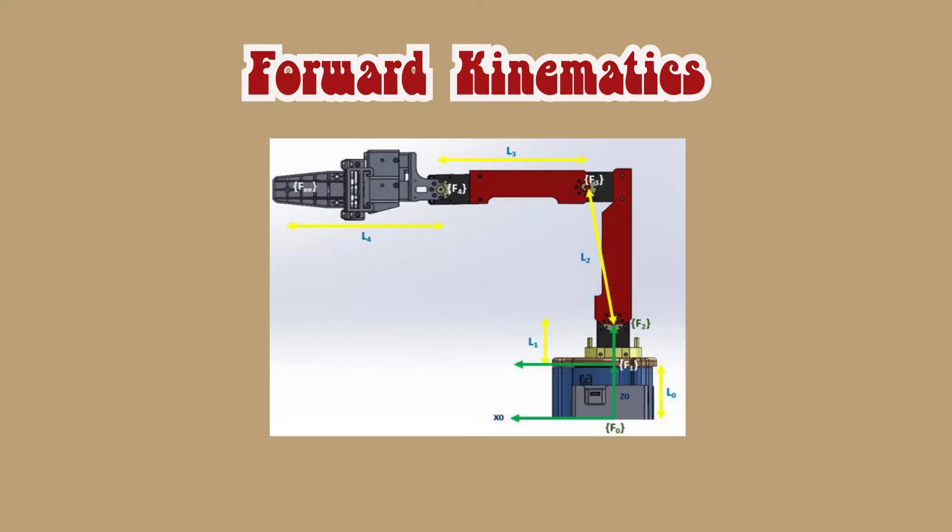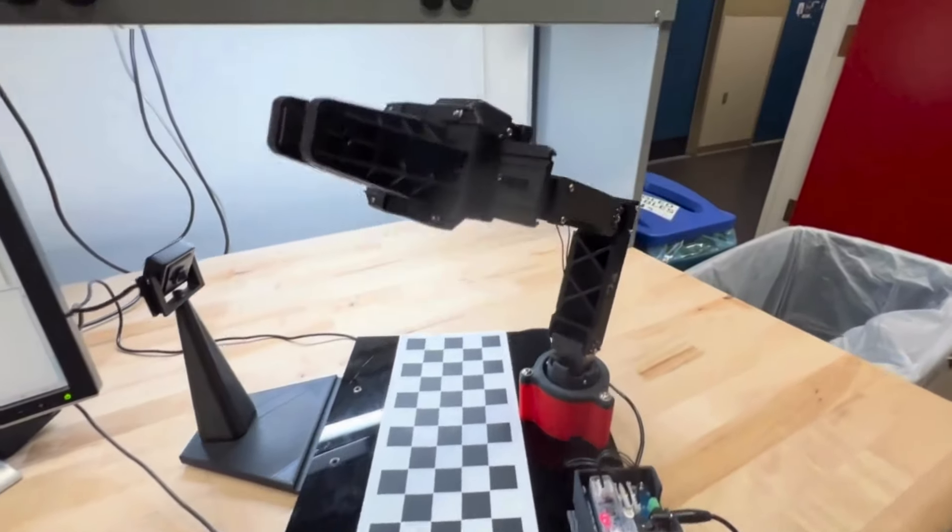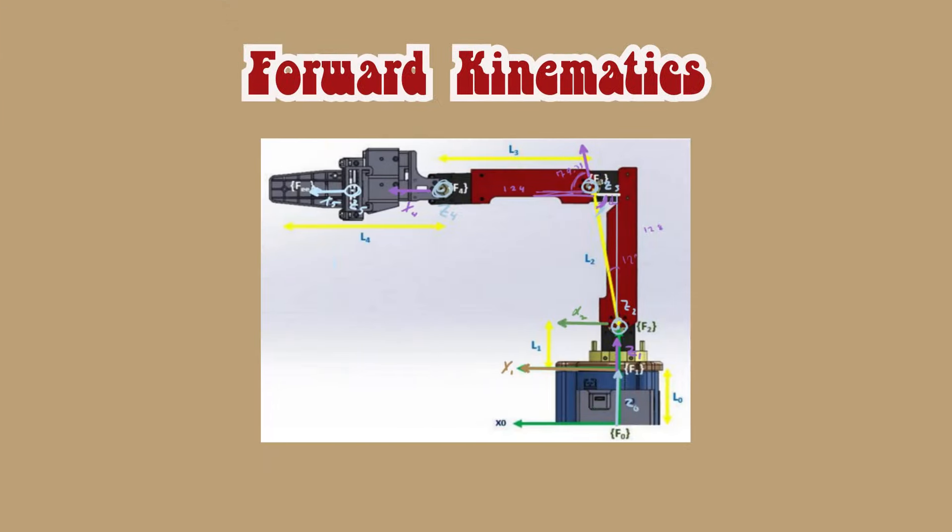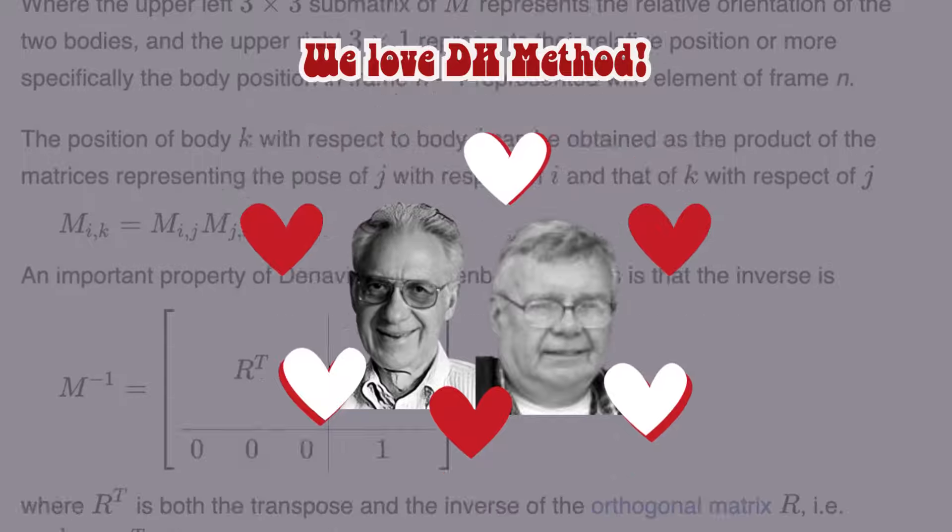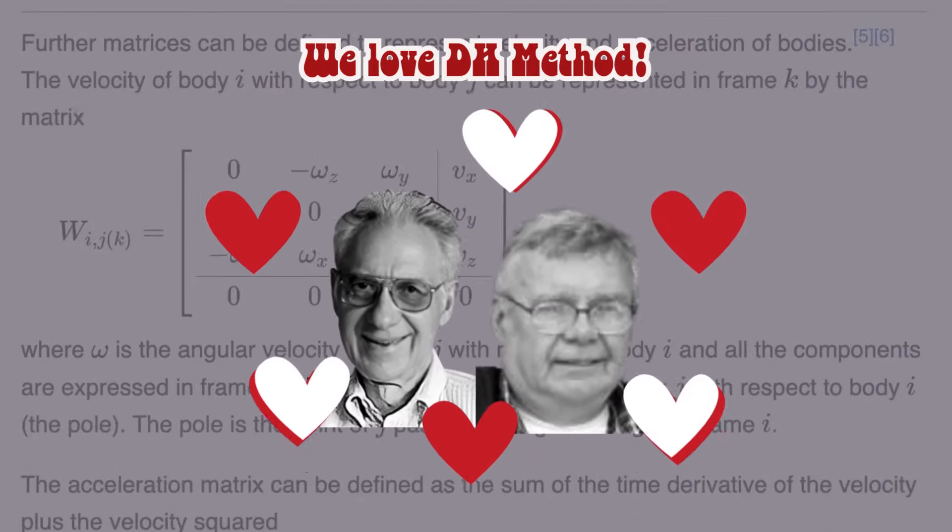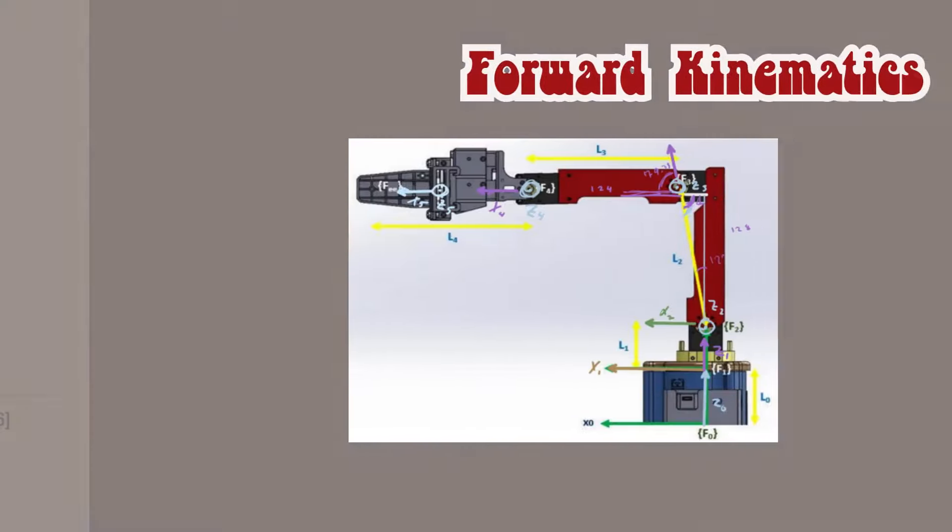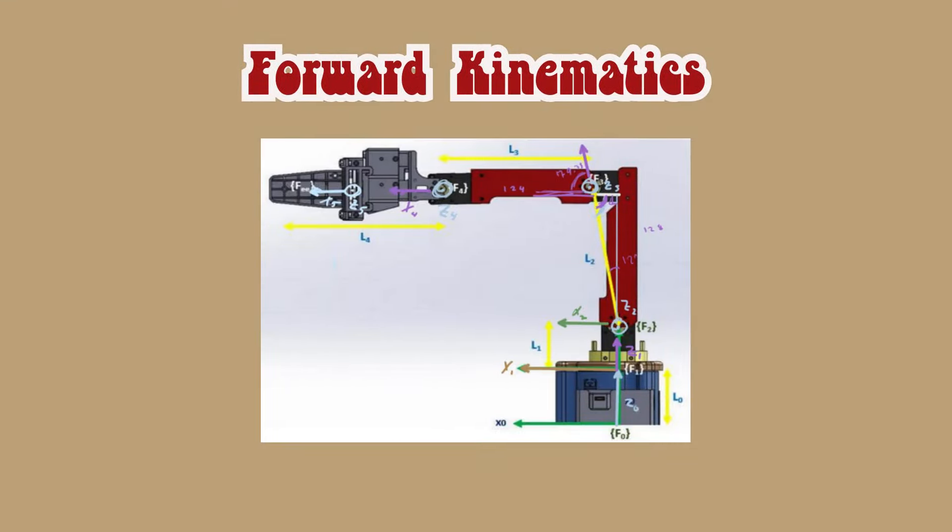First, we need forward kinematics, so that if we move each joint to a certain angle, we know where the tip of the robot arm is. To figure that out, we use the DH method. These handsome lads are Jock Denevitt and Richard Hardenberg, the creators of the DH method. And they help us solve forward kinematics. We love Jock and Richard on this channel.